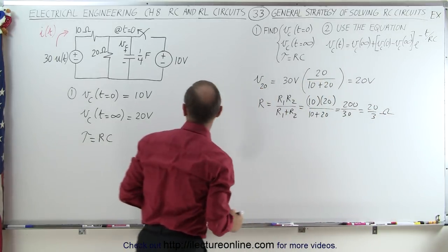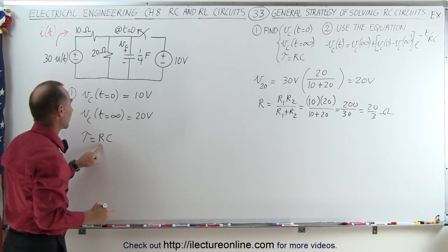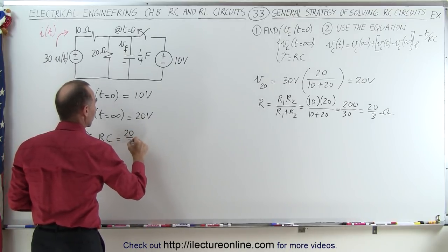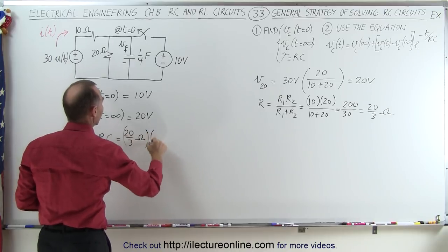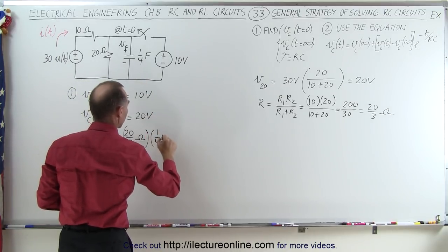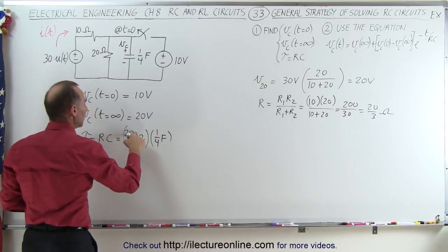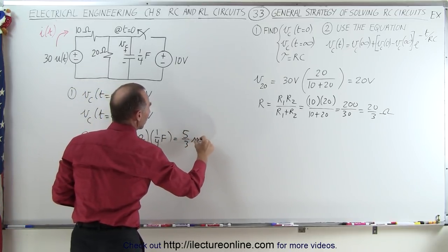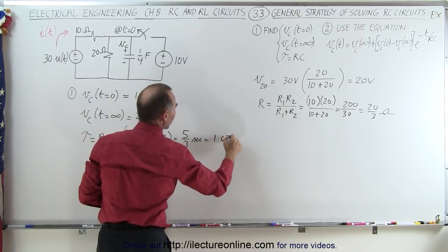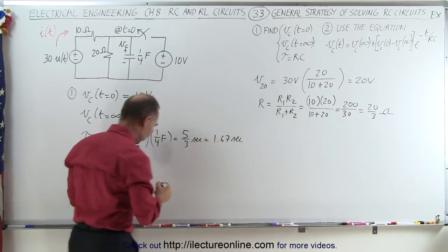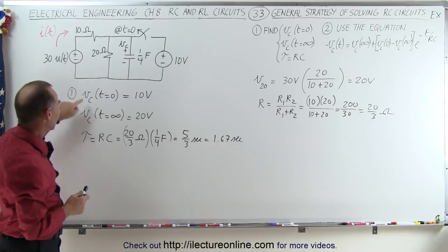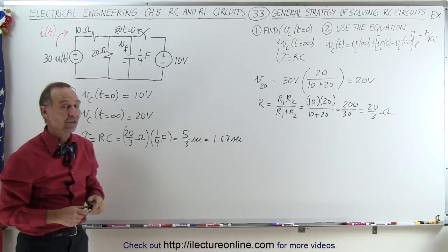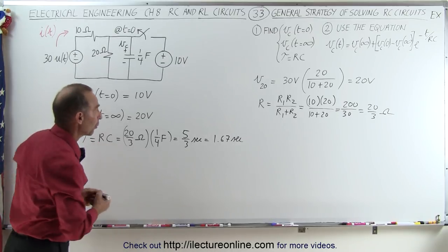That's the resistance we need for the time constant. The time constant is 20 over 3 ohms multiplied by one quarter of a farad — 4 goes into 20 five times — giving 5 thirds of a second, which is 1.67 seconds in decimal form. Now we have the voltage at t equals zero, the voltage across the capacitor at infinity, and the time constant. We're ready to write our equation.